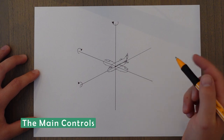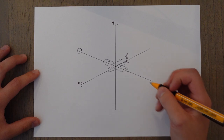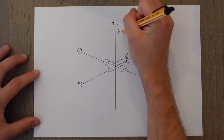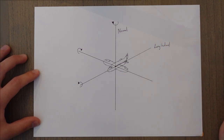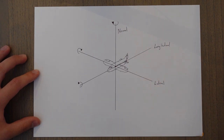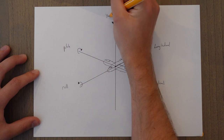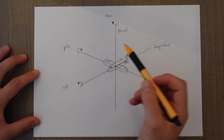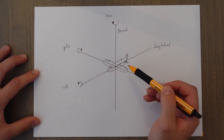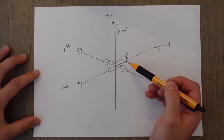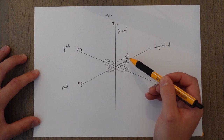The main controls on an aircraft are those that provide us with movement around the three main axes. They are the normal axis, the longitudinal, and the lateral. The movements around these axes are known as pitch, roll, and yaw. Roll is primarily controlled by ailerons on the wings. Pitch is primarily controlled by the elevator at the tail, and yaw is primarily controlled by the rudder, also located at the tail.